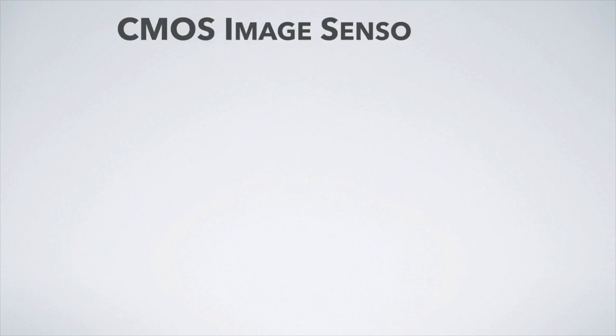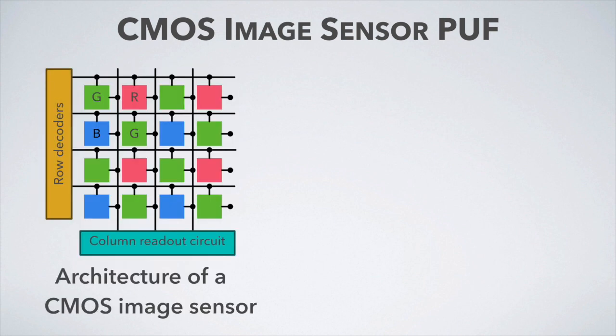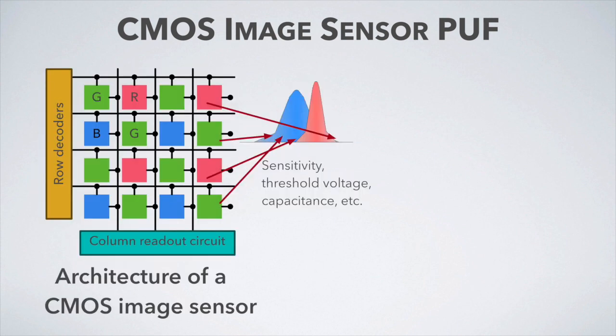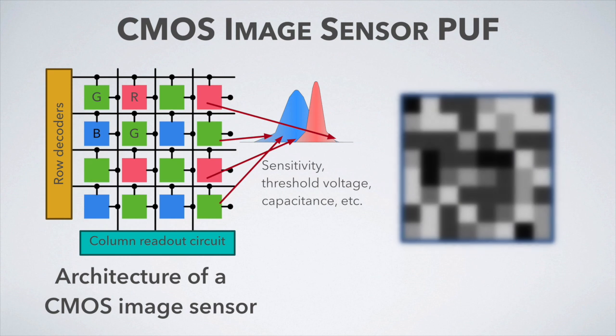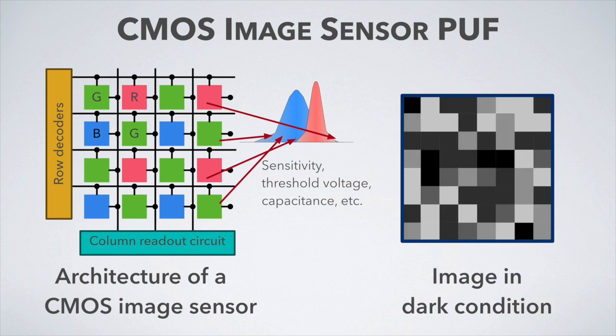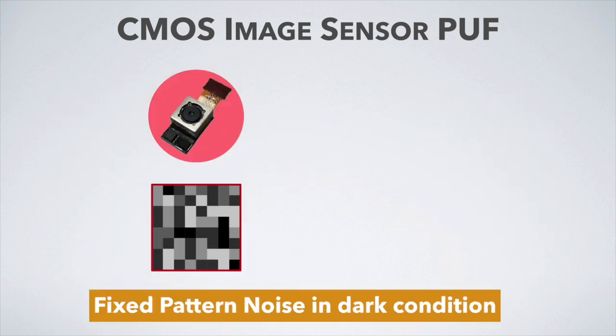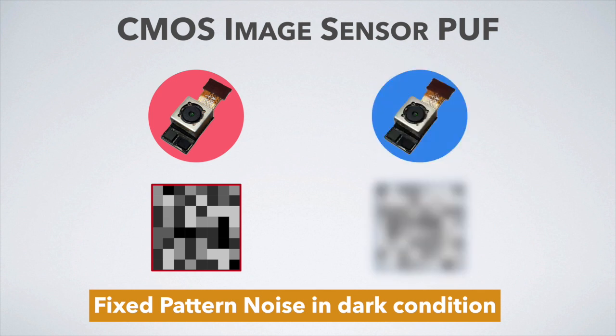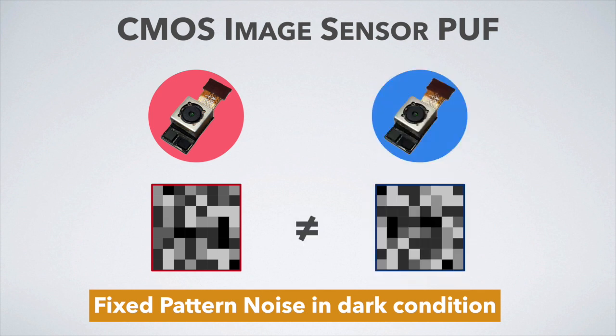Among various methods of implementing PUFs, we propose a CMOS image sensor-based PUF. Semiconductor manufacturing variation in a CMOS image sensor appears as fixed pattern noise on the image in dark conditions. This unique noise pattern, caused by sensor imperfection, is different from sensor to sensor, even between identical models.